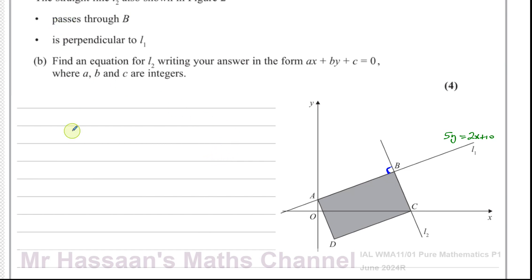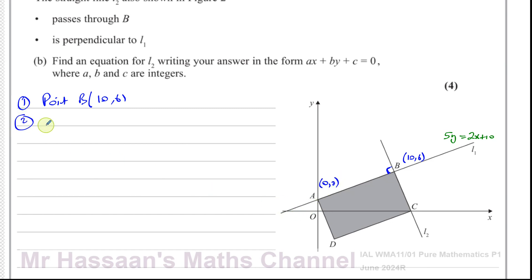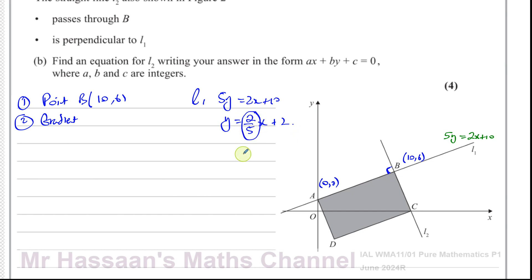To find the equation of a straight line, we need a point it passes through and its gradient. We have point B at (10, 6). For the gradient: from line 1, 5y equals 2x plus 10. Making y the subject gives y equals (2/5)x plus 2, so the gradient of line 1 is 2/5.